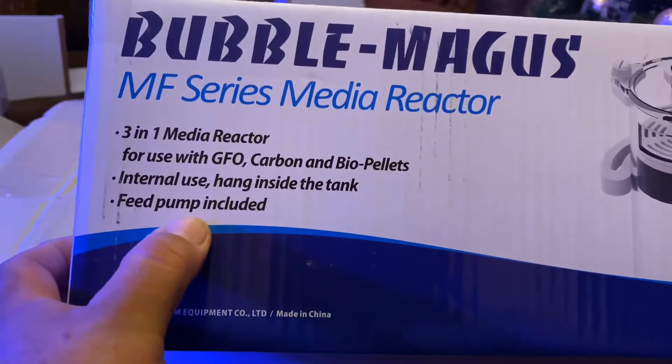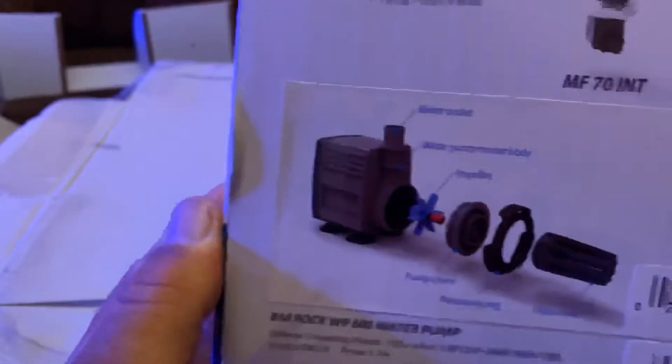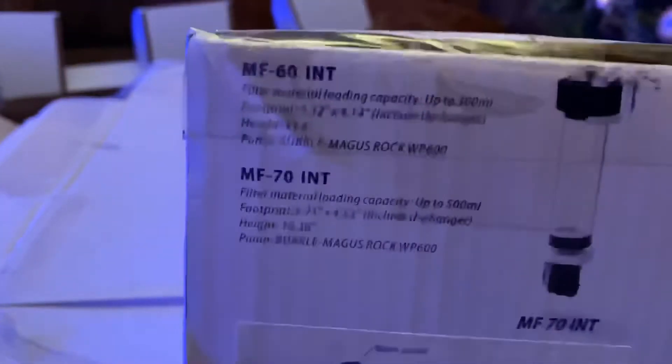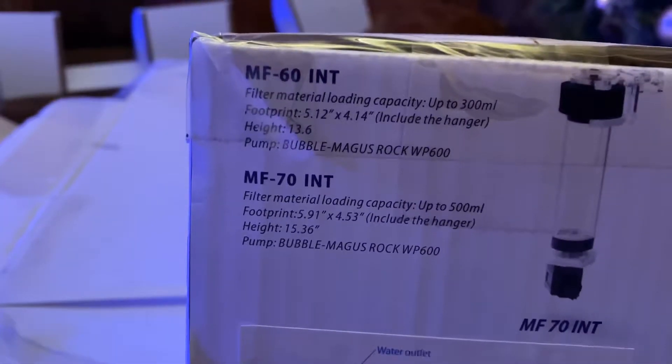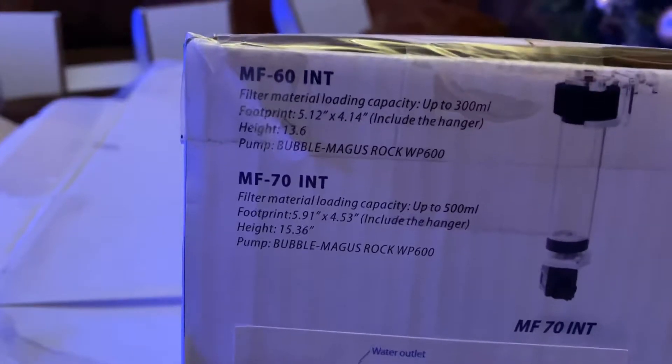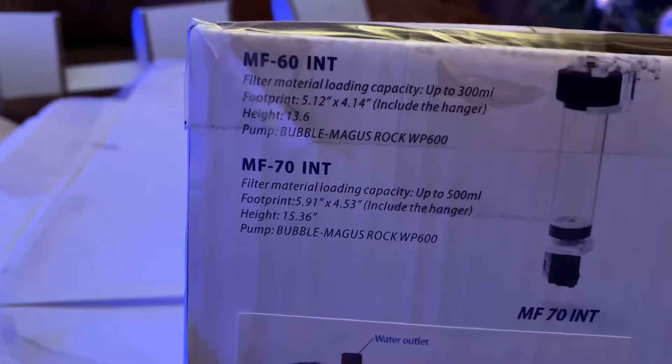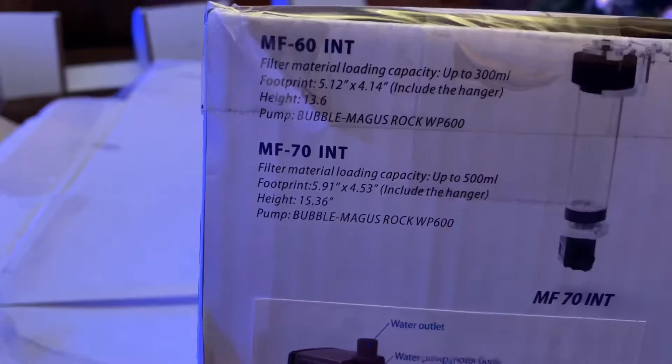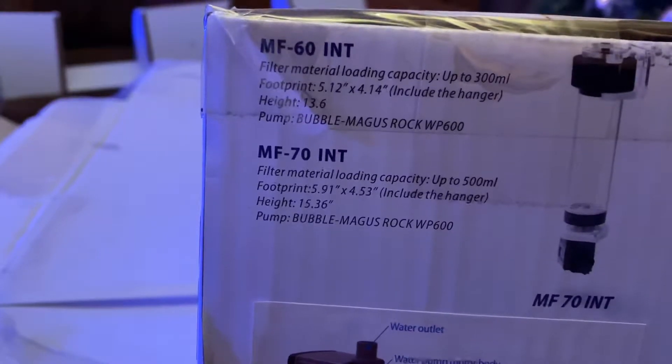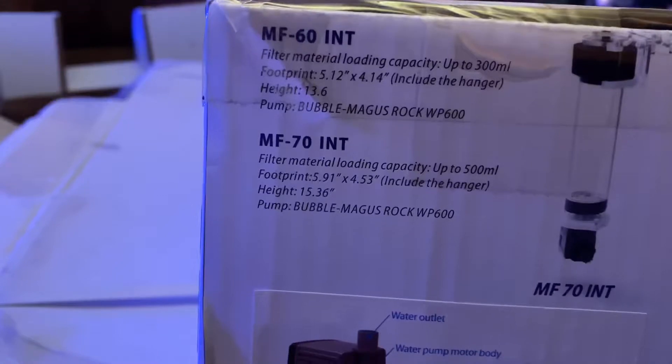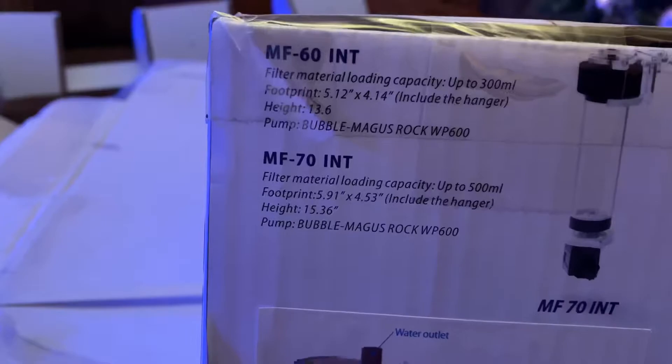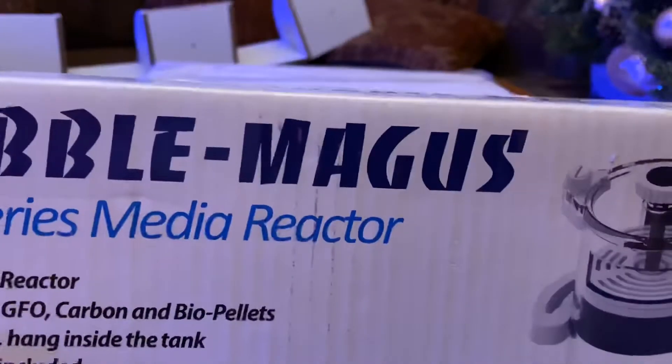Right there. There's two models - they have the 60 and the 70. It comes with the Brock WP 600 pump. The height is 13.6 inches and the footprint is 5.12 inches by 4.14 inches, including the hanger. It's pretty nice. Alright, let's open it up.